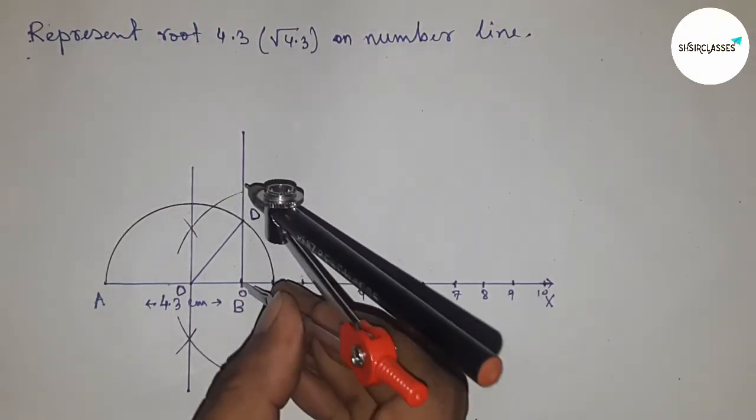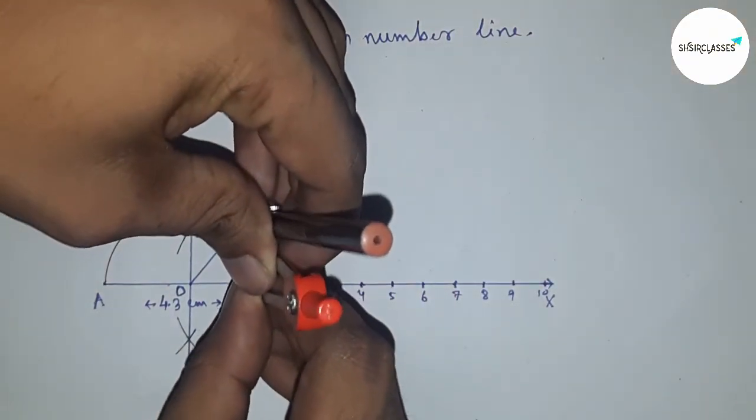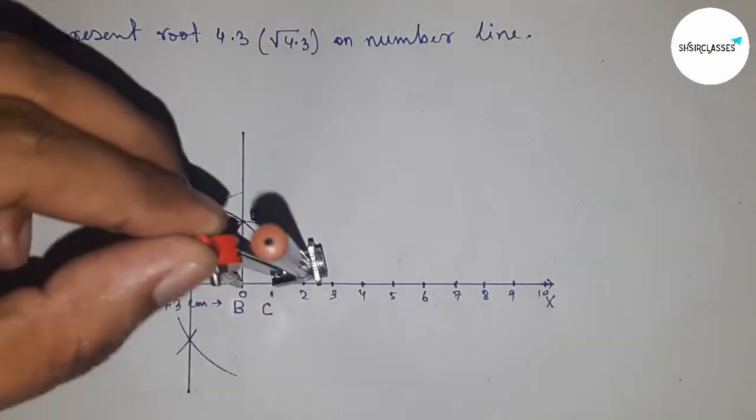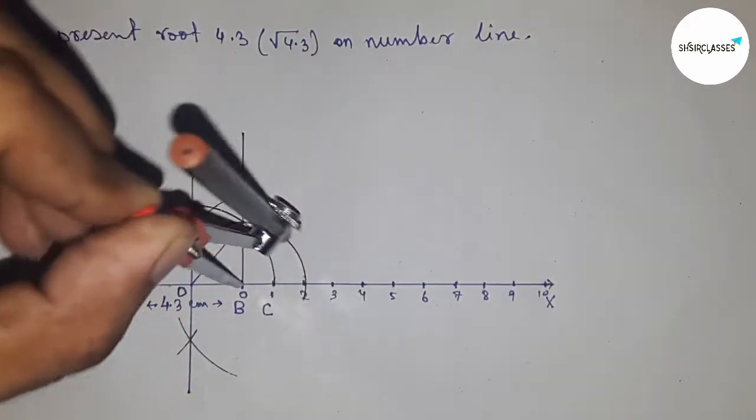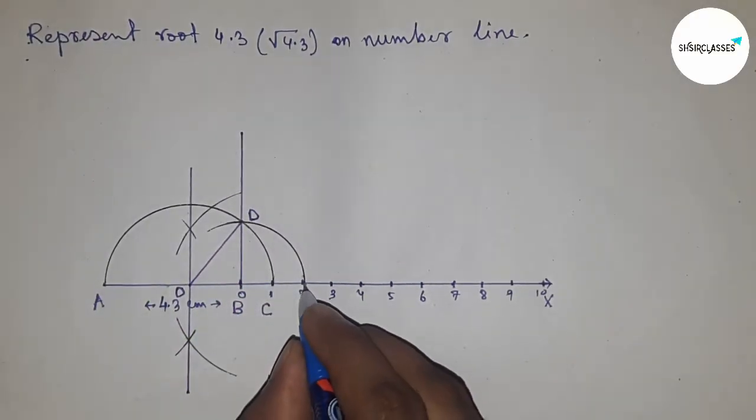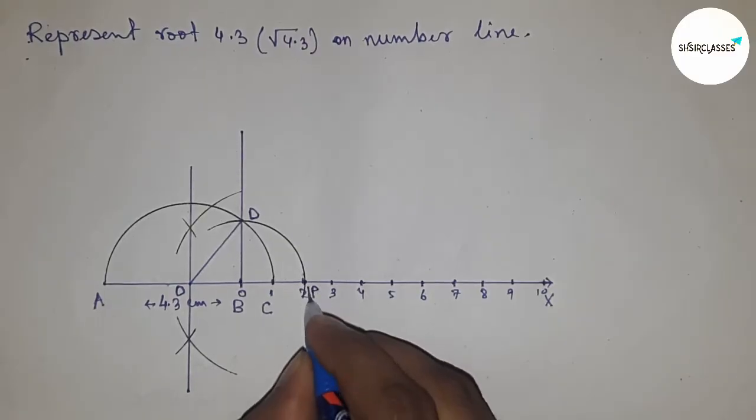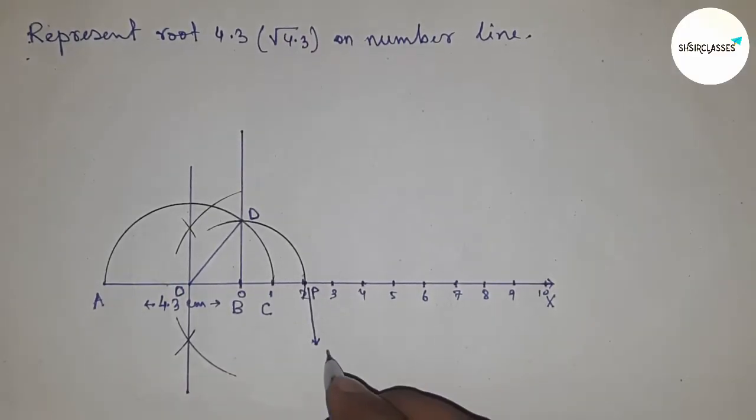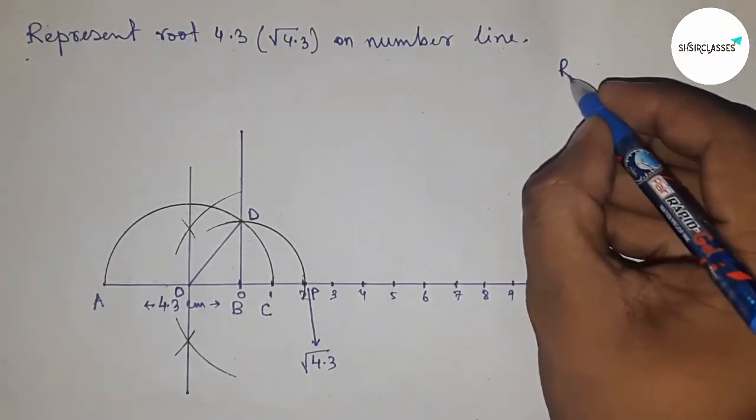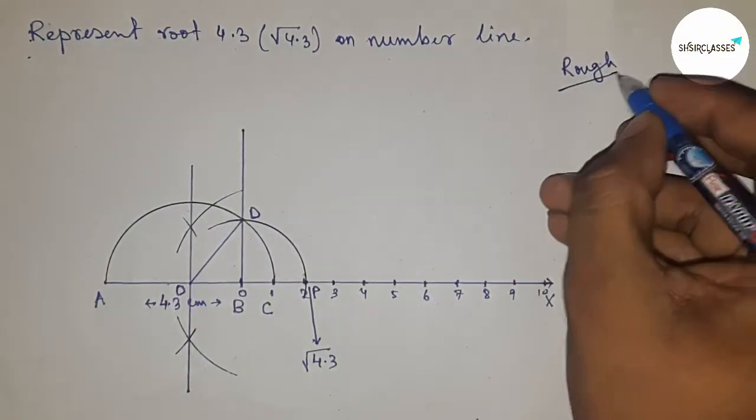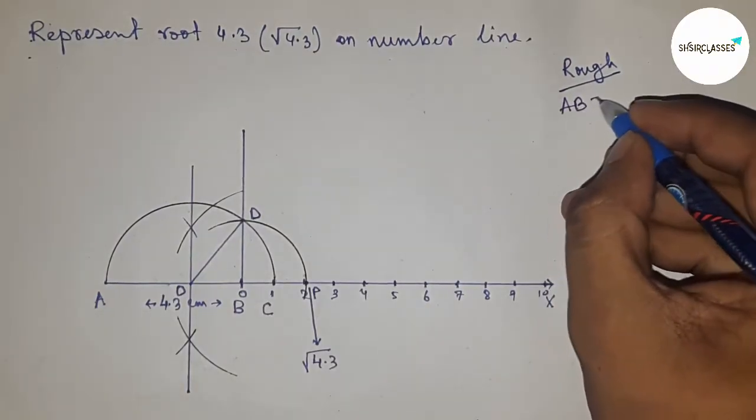Taking the length BD with compass and drawing an arc which cuts the number line at a point. So this is the representation of root 4.3. Next, roughly discussing the calculation of root 4.3.